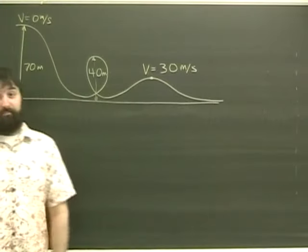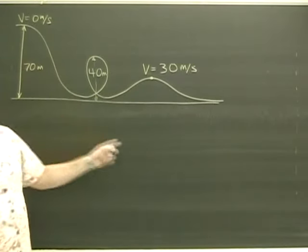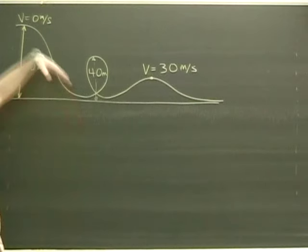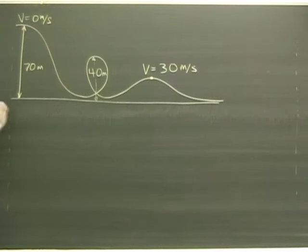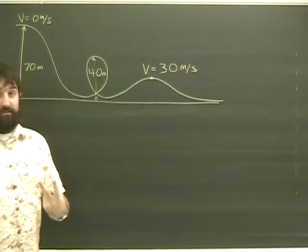We're looking at a conservation of energy problem, the roller coaster. In our example, the roller coaster is going to start with a speed of zero from a height of 70 meters. And the question has two parts to it.